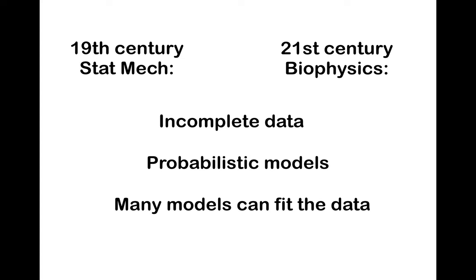There are a number of things in common between 19th century statistical mechanics and 21st century biophysics. In the 19th century, statistical mechanics was concerned about distributions in phase space of gases made up of a very large number of degrees of freedom. From very limited macroscopic data — such as pressures, volume, or temperature — they wanted to infer entire distributions of phase space, made up of Avogadro's number of degrees of freedom.